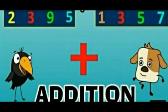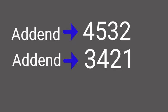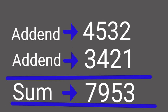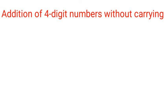Chapter 3: Addition. Today let us revise addition and see how to add four-digit numbers. We already know that the numbers we add are called addends, and the answer we get after adding is called the sum.